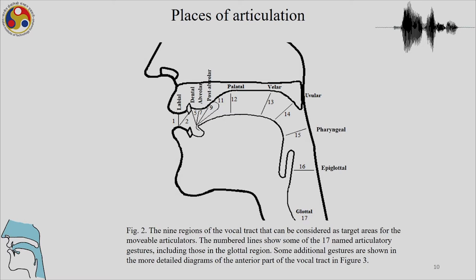We can see the dental and alveolar regions. The tongue can move to the post-alveolar or palato-alveolar region, the alveolar region, and the dental region, using either the tongue tip or the tongue blade. If it is the tongue tip, it will be an apical gesture; if it is the tongue blade, it will be a laminal gesture. Depending on what sounds you are producing, the part of the tongue used could be either apical or laminal.